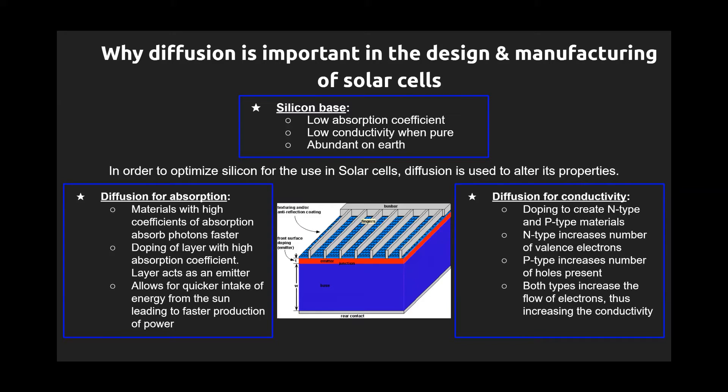To increase the conductivity, diffusion doping of N and P-type materials is used to alter the number of valence electrons, which creates an electrical potential difference, allowing the energy from the sun to be quickly sent out as an electrical current to create power.